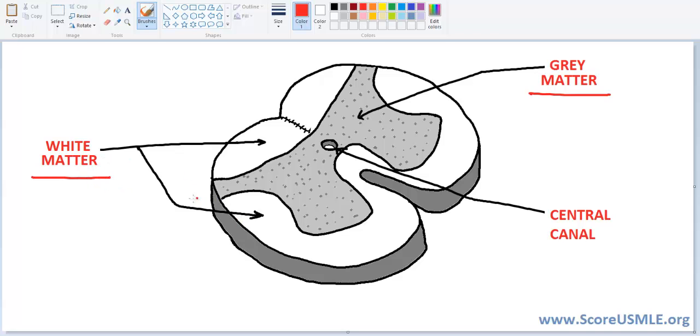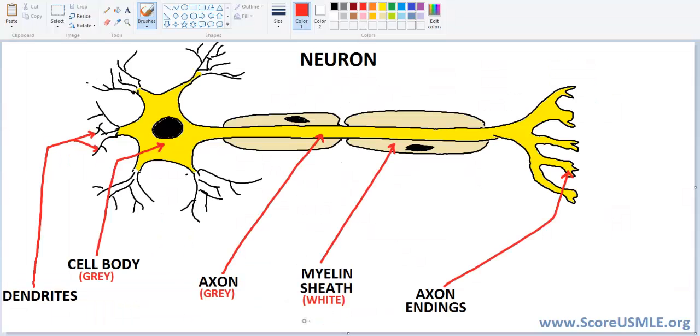Now what constitutes the grey and the white matter? Let me take you to the very basics of the nervous system, that is the neuron. Now you can see this is a typical neuron with dendrites labeled right there and the cell body. Then there's an axon and then the myelin sheath and then the axon endings. You can see all those parts in the diagram.